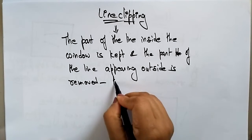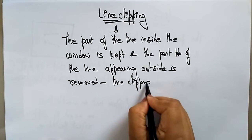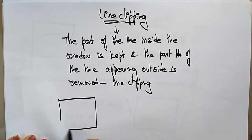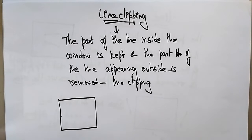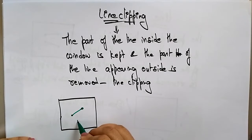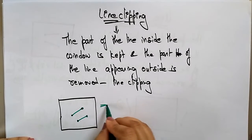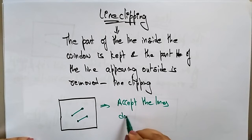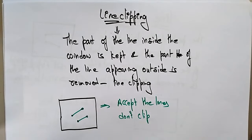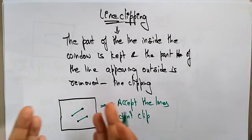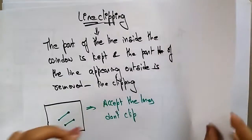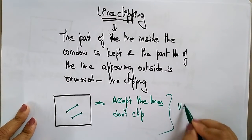Let's take a clipping window as an example. If a line has both endpoints present inside the clipping window, then you accept those lines and don't clip them — there is no requirement to clip, because both endpoints are inside the clipping window. We call this type of line a visible line.